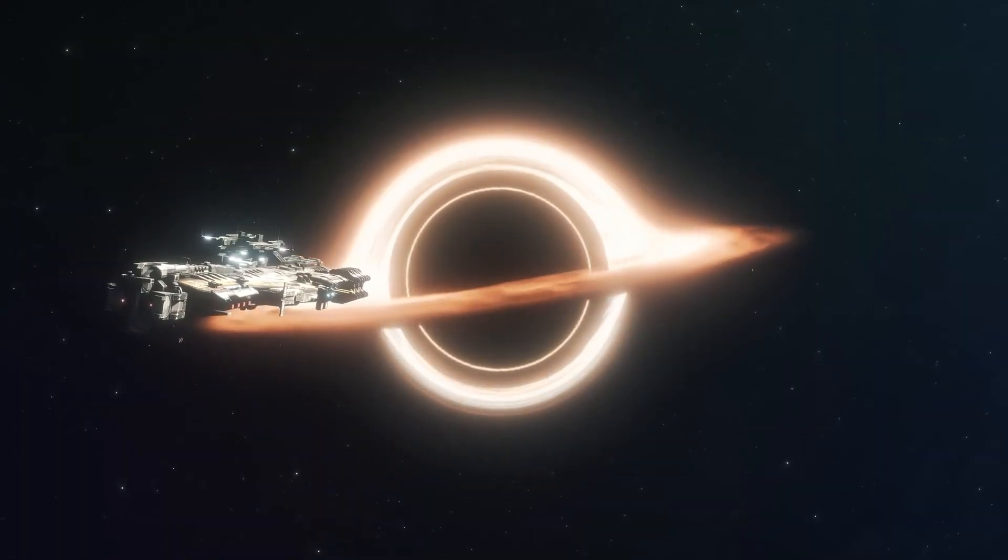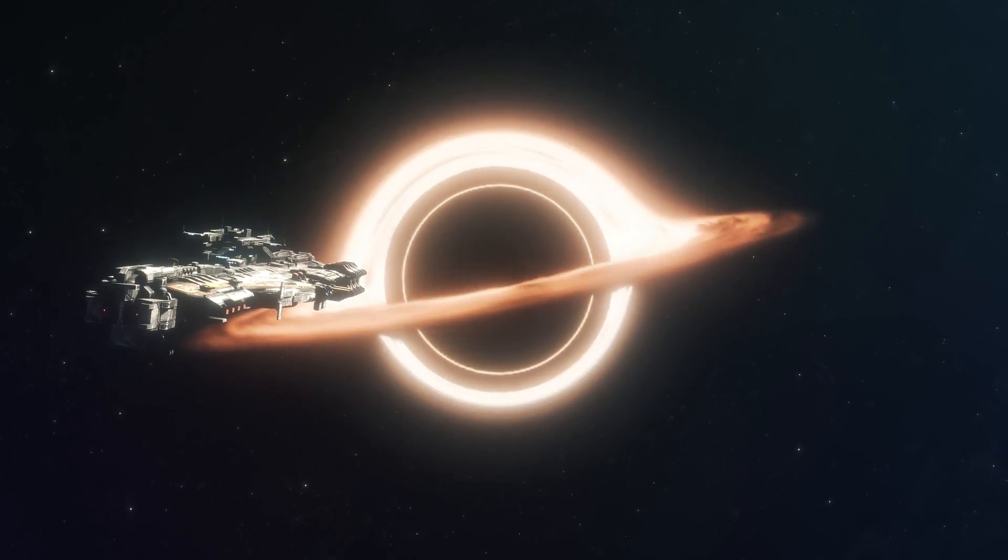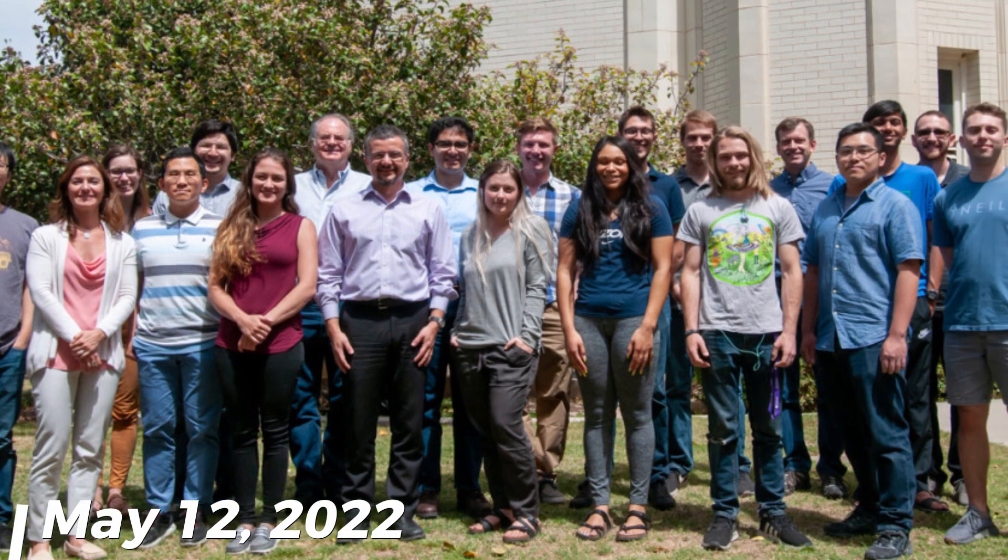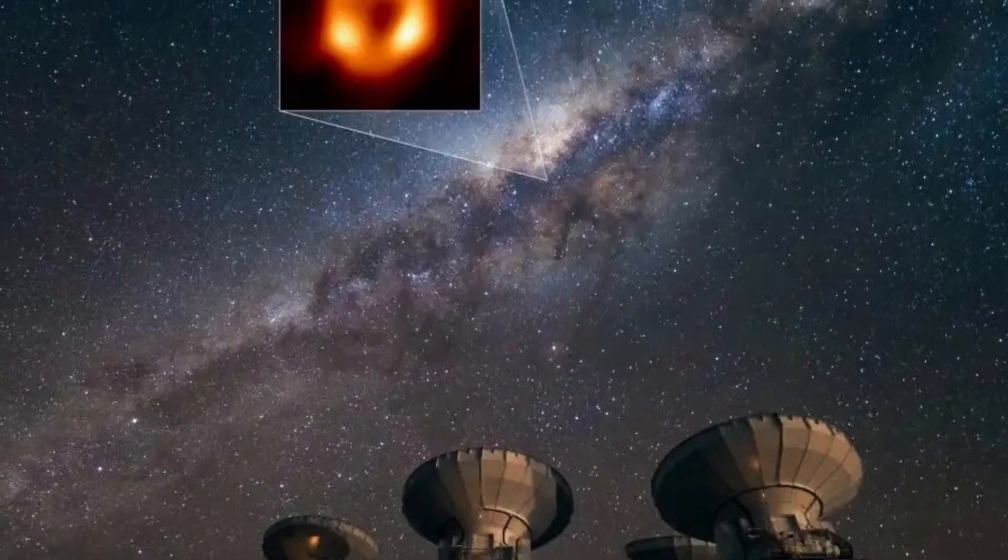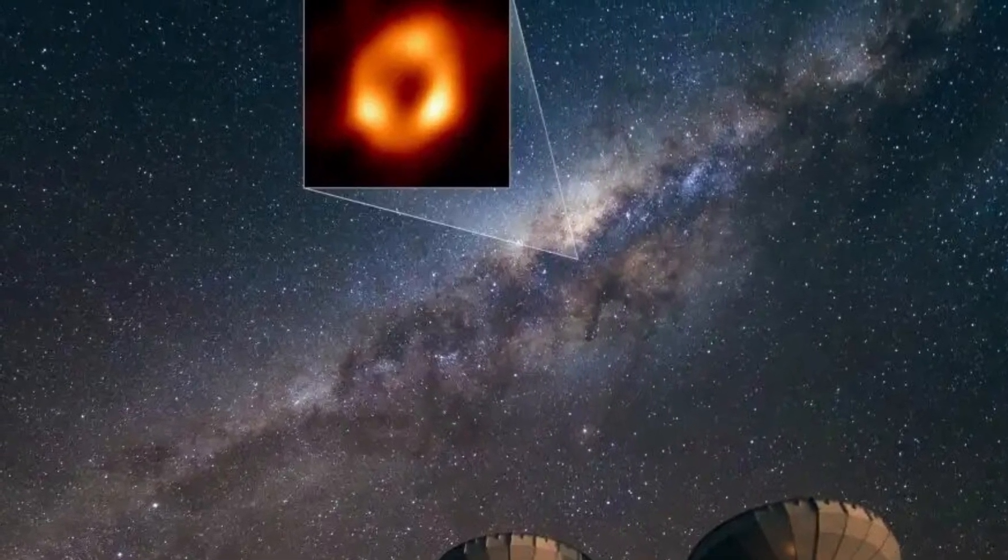But compared to most supermassive black holes you'll find out there, Sagittarius A is pretty regular. On May 12, 2022, astronomers on the Event Horizon Telescope team released an image of a black hole. It was supposed to depict Sagittarius A as it lay at the center of the Milky Way galaxy.